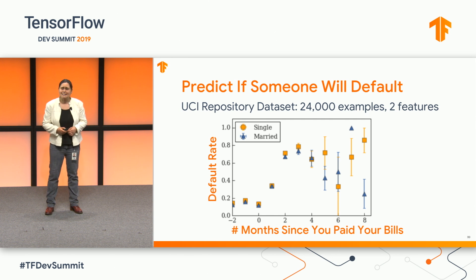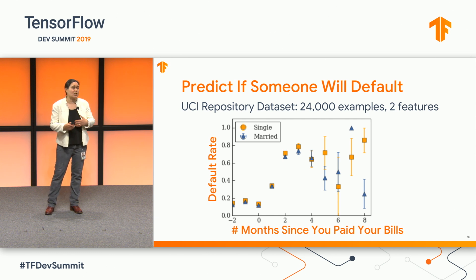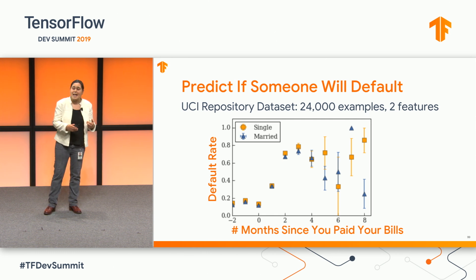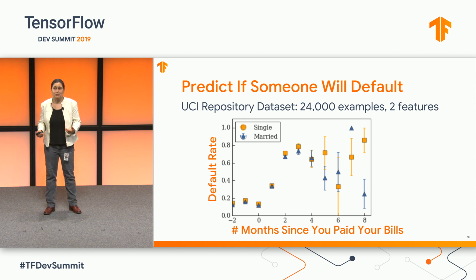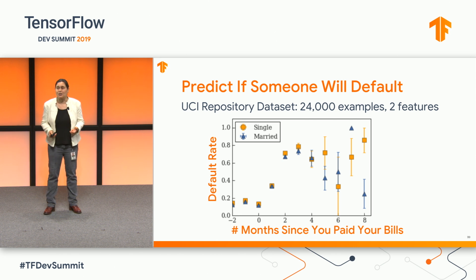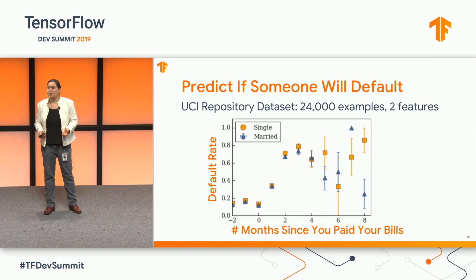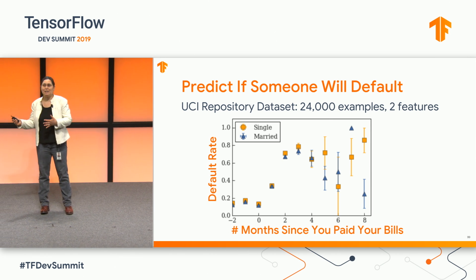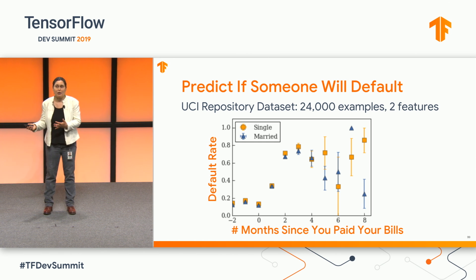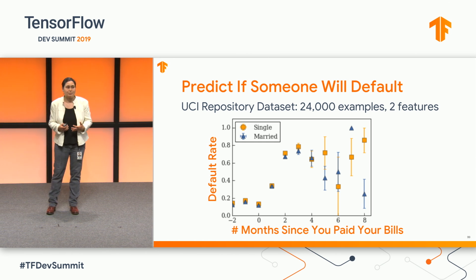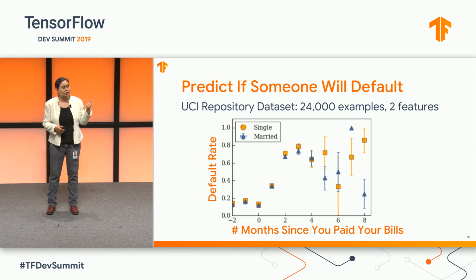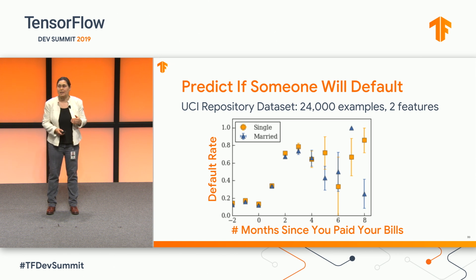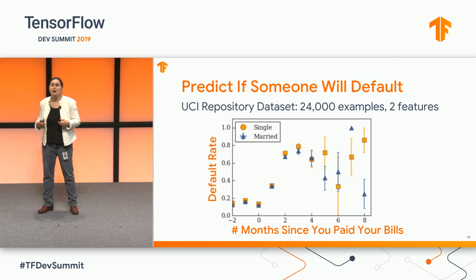What I'm showing here is the actual training data. The two features are: are you single or are you married, and how many months has it been since you paid your bills? We're trying to solve the regression problem of predicting whether you're going to default on your credit. You can see that while there are 24,000 samples, there's not that many people who haven't paid their bills for six months or more, so we're getting a bit sparse in that part of the region space. What you're seeing here is the mean and the confidence interval of the actual training data.